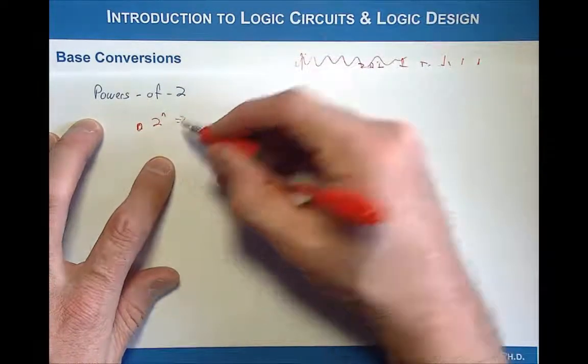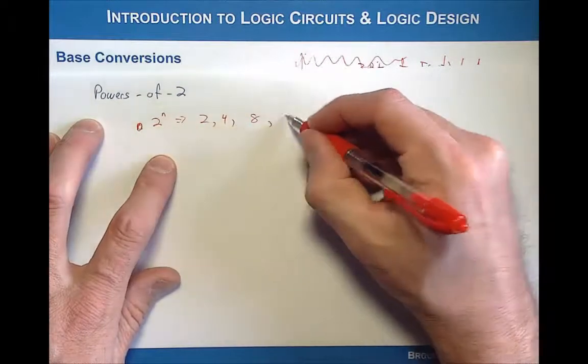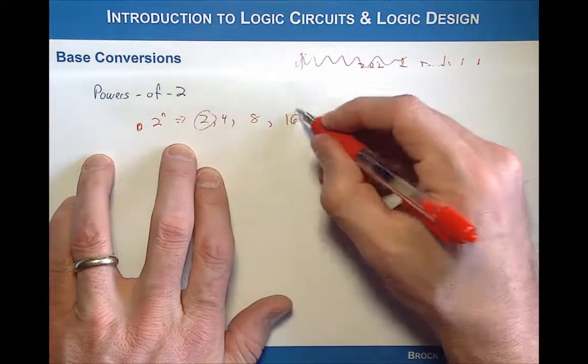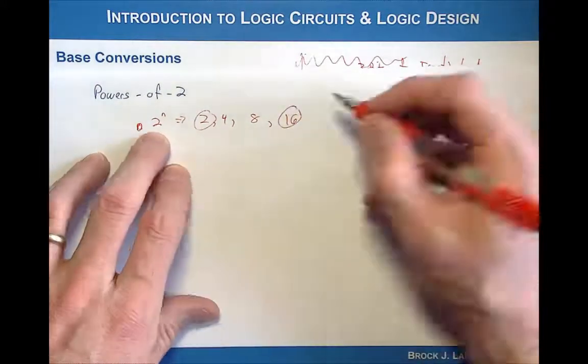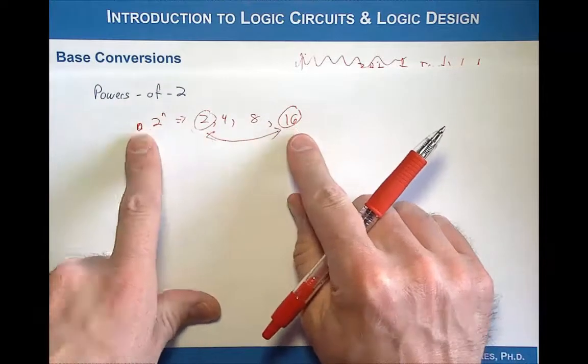So these are bases such as they might have 2 numbers in them, 4 numbers, 8 numbers, or 16 numbers. Of special interest to us is converting between binary to hexadecimal. These are powers of 2 because they have a number of symbols that is a power of 2.